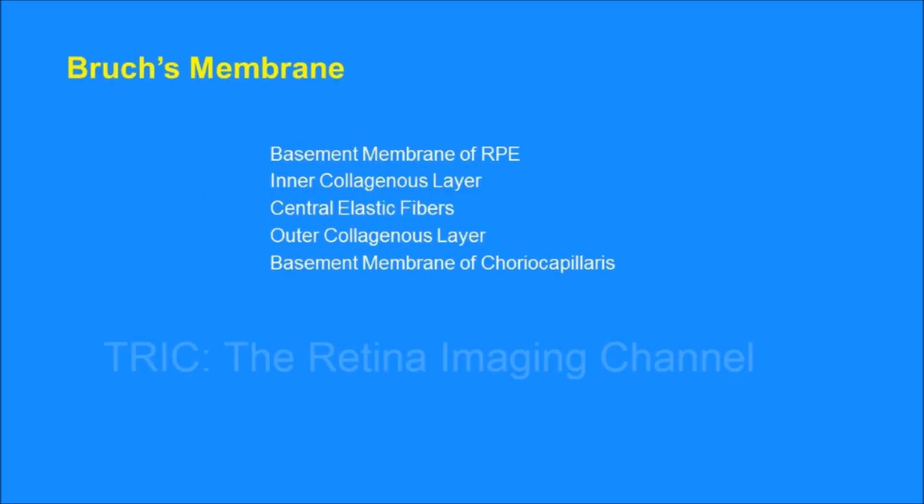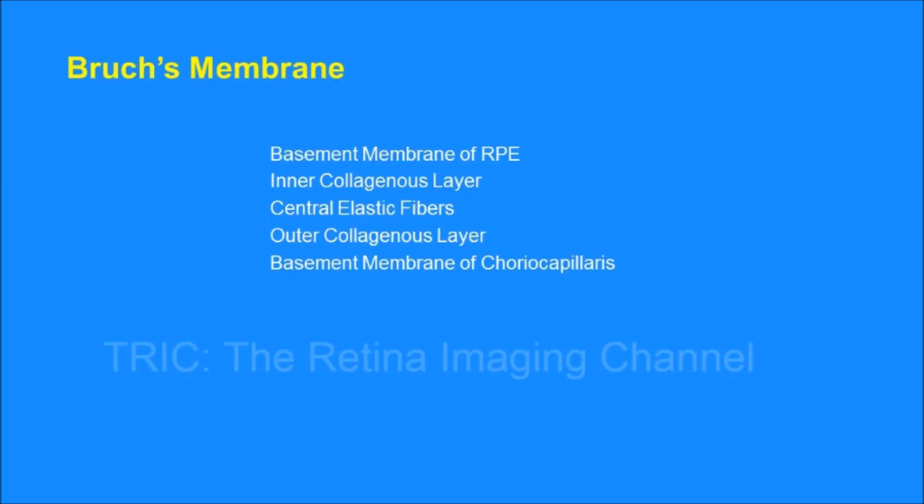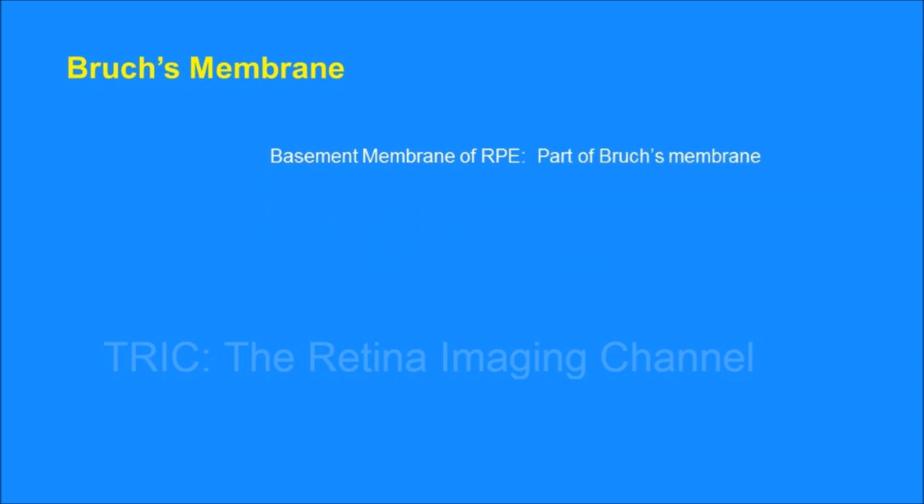To understand DLS we need to first understand the anatomy of the Bruch's membrane. It is a 5 layer membrane which has contribution from RPE to choreo capillaries. The first layer is basement membrane of RPE, followed by two collagenous layers with a middle elastic layer, and finally the basement membrane of choreo capillaries. What is important to understand is that the basement membrane of RPE is a part of Bruch's membrane.